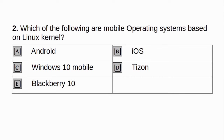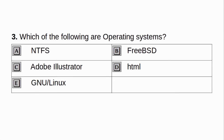Which of the following are mobile operating systems based on Linux kernel? a. Android. b. iOS. c. Windows 10 Mobile. d. Tizen. e. Blackberry 10. Answer: a and d. Which of the following are operating systems? a. NDFS. b. FreeBSD. c. Adobe Illustrator. d. HTML. e. Pnew Linux. Answer: b and e.